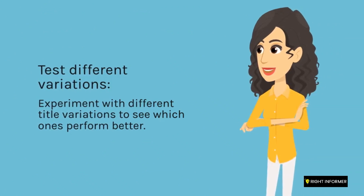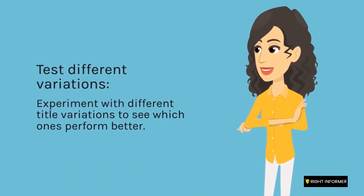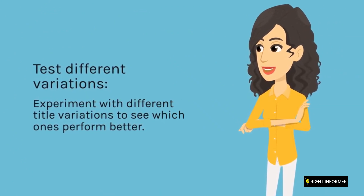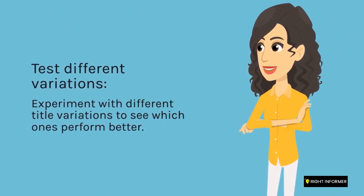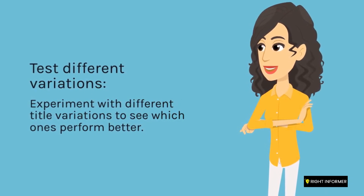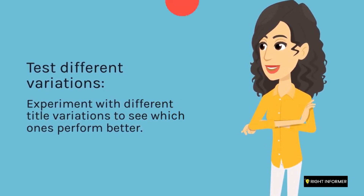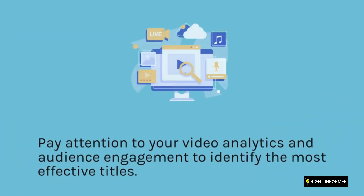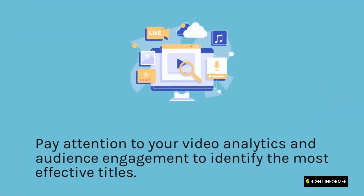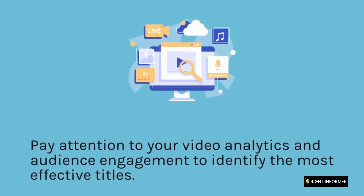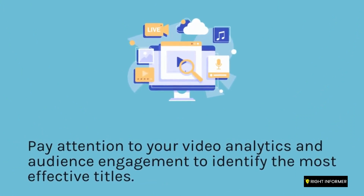Test different variations. Experiment with different title variations to see which ones perform better. Pay attention to your video analytics and audience engagement to identify the most effective titles.